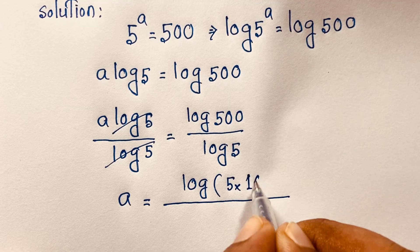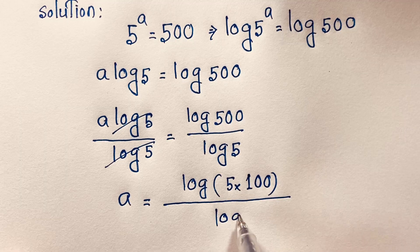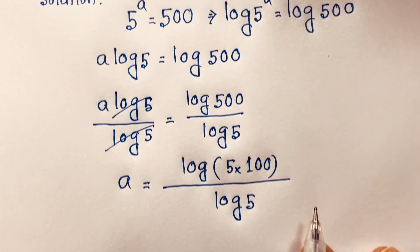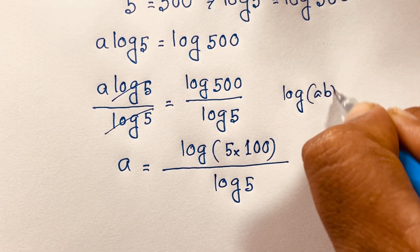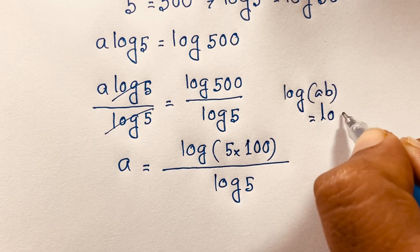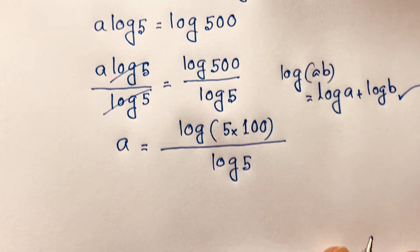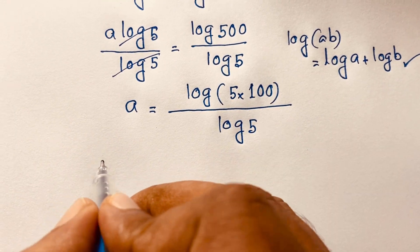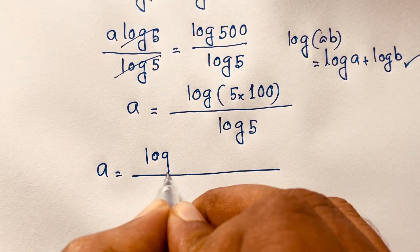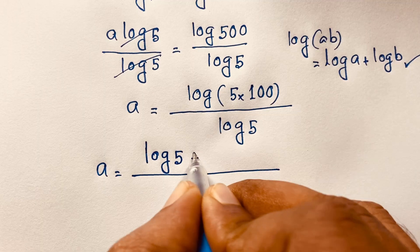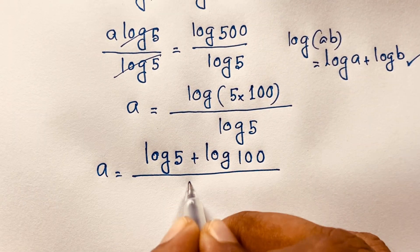Now I rewrite log 500 as log(5 × 100), because 5 times 100 equals 500. So this becomes log(5 × 100) over log 5. I then apply the logarithm product rule.